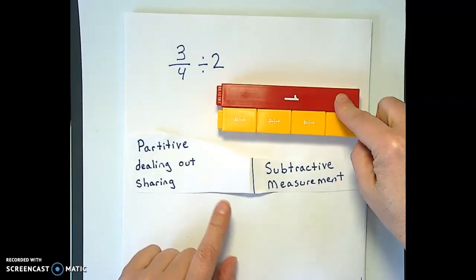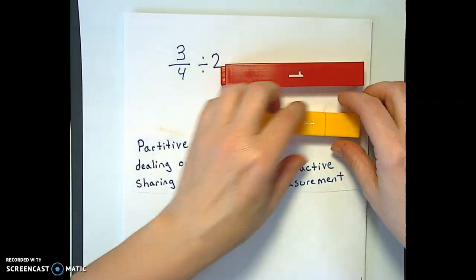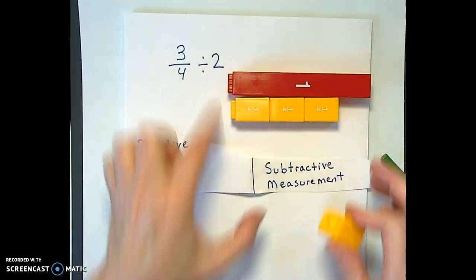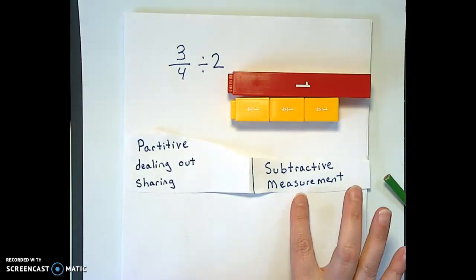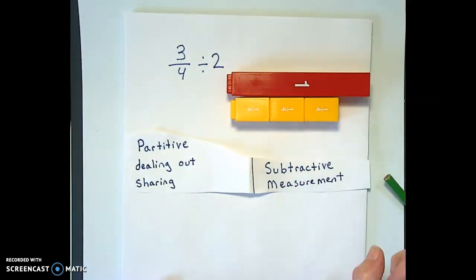I always like to show the 1 to have some idea of what fraction we're looking at and we're looking at 3 quarters of a whole and we're trying to divide it by 2. Can we divide this partitively as in trying to break things evenly onto two plates or share evenly with two people or can we do it using subtractive measurement by repeatedly taking away 2?